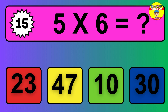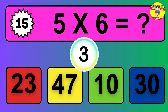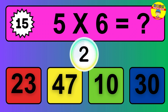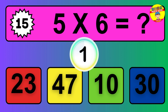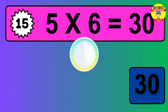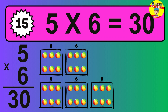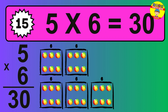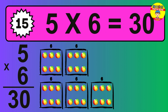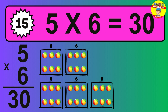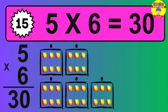Question 15. Five times six equals what? The answer is five times six is thirty. To calculate, we have five groups with six balls each one. So how many balls do we have? Thirty balls.